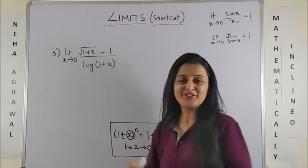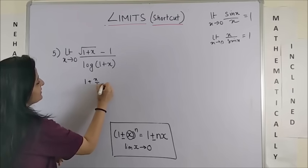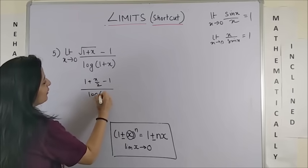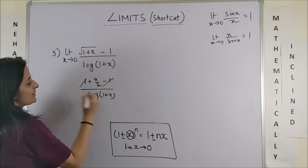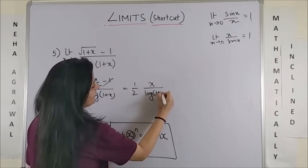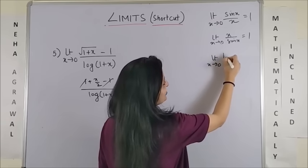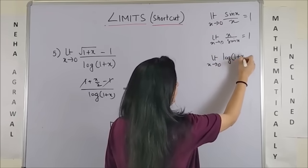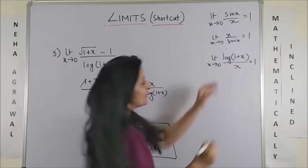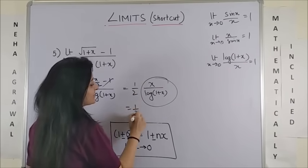Look at the fifth one. Again, the same logic. It goes 1 plus x by 2 minus 1 upon log 1 plus x. These two get cancelled. Your 1 by 2 comes down. We are left with this. Now, I am using the formula limit x tending to 0 log of 1 plus x by x is 1. So even the reciprocal becomes 1. This vanishes. The answer is half.